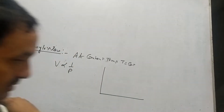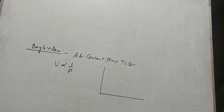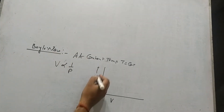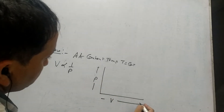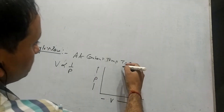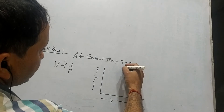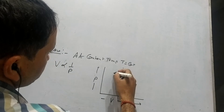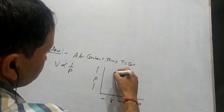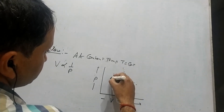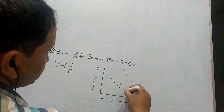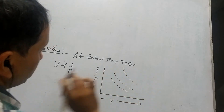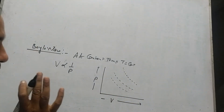If we draw a graph between pressure and volume, we draw two conditions. One is the ideal or theoretical concept, which is what Boyle's law predicts, giving us three curves. The dotted curves represent the theoretical prediction according to Boyle's law.